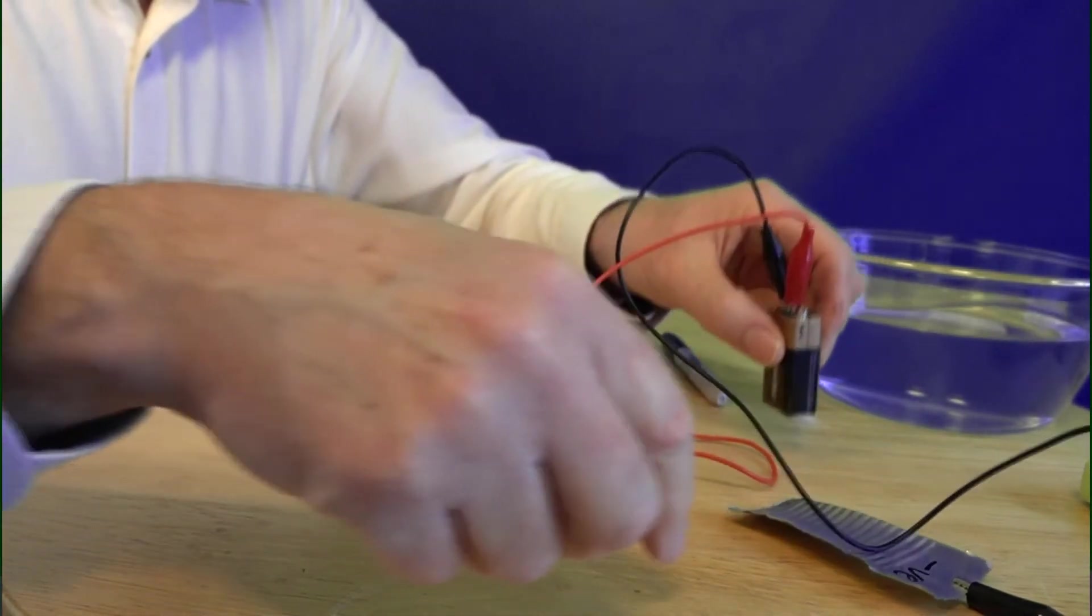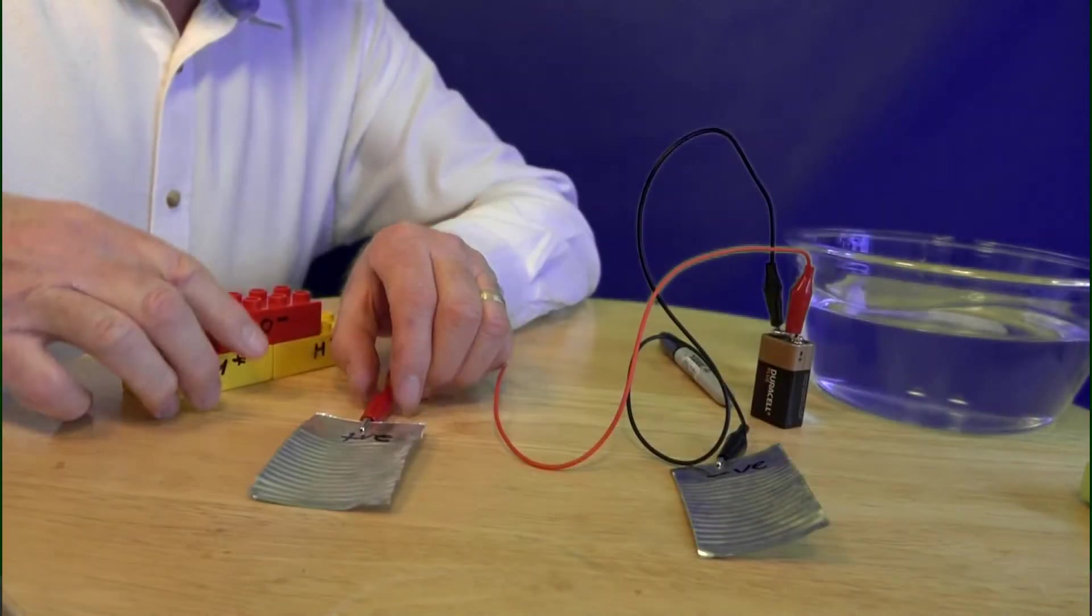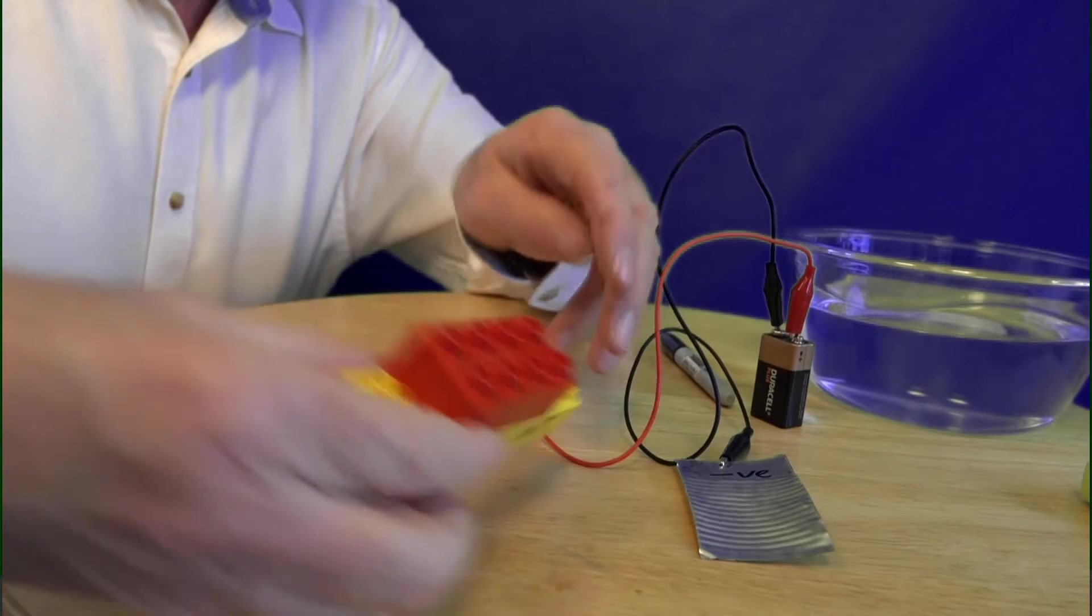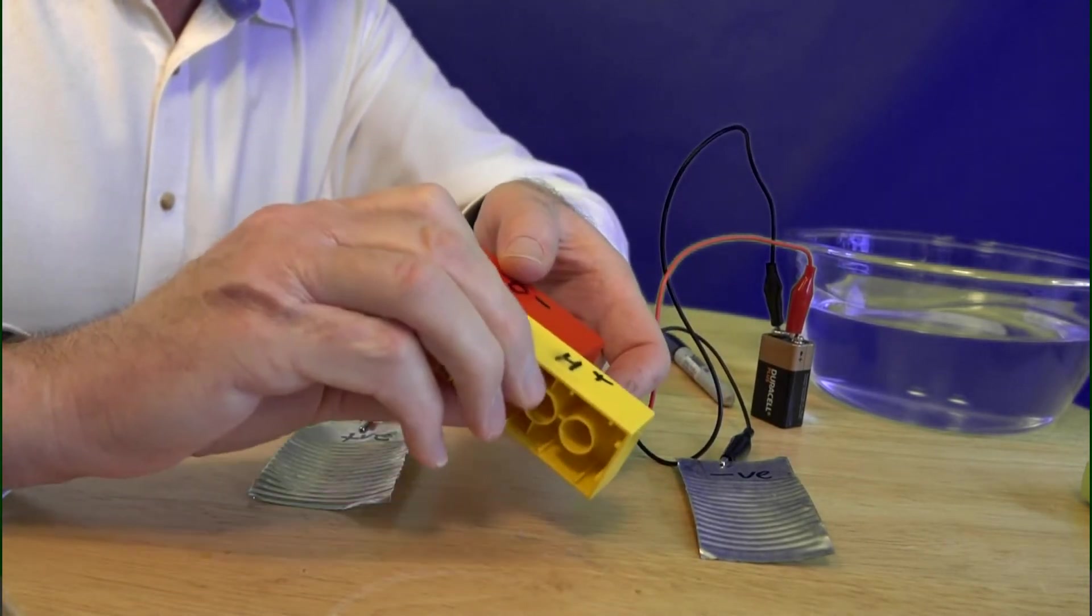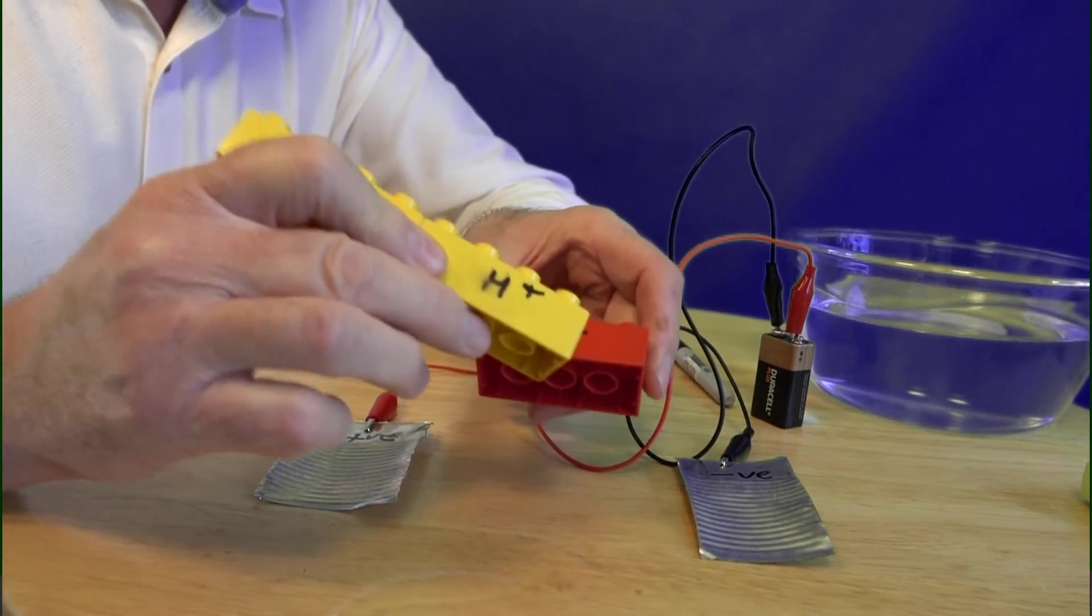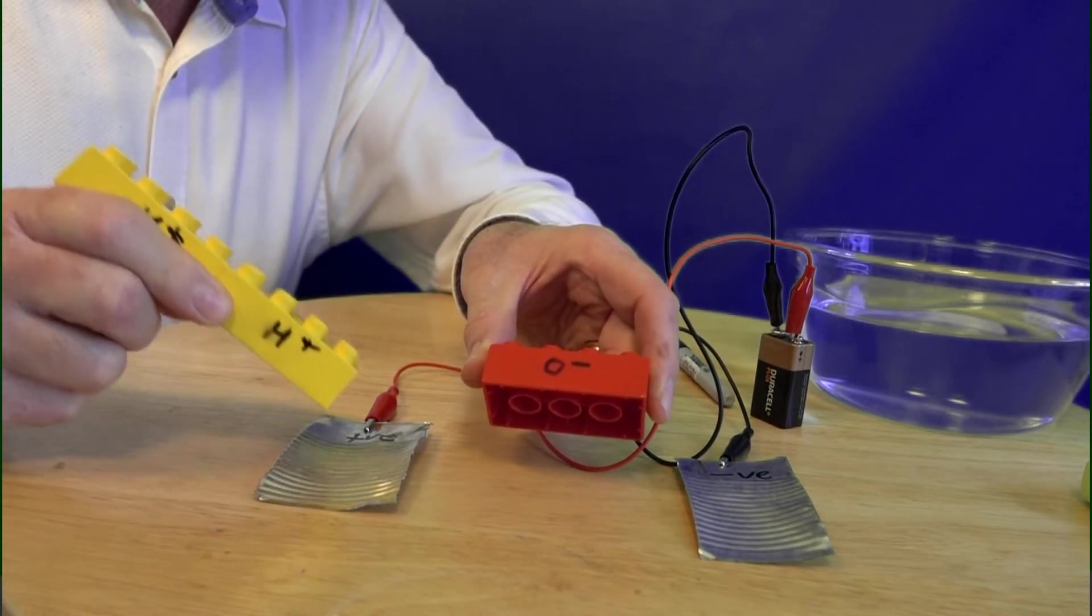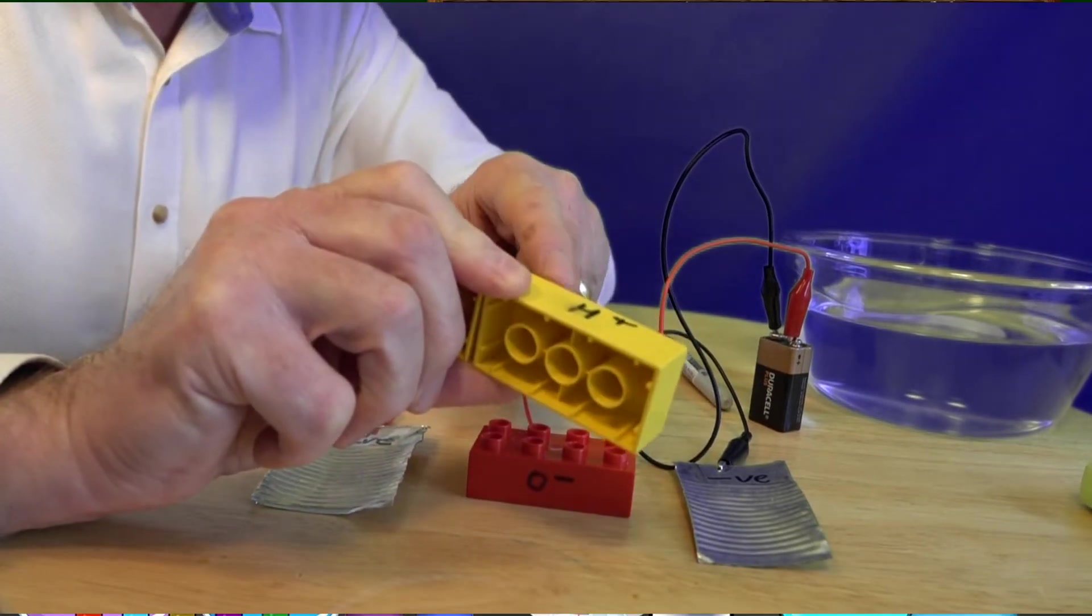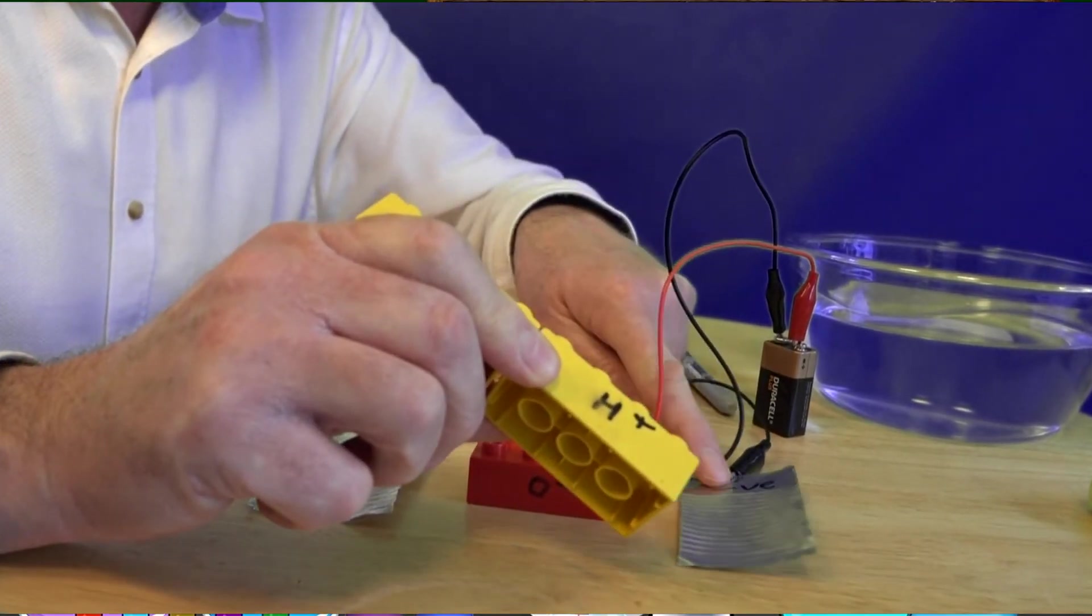Why this is important is because remember our water molecule here, the hydrogen is positively charged. So we'll put a little plus on there and a little plus on there, and the oxygen is negatively charged. So we'll put a minus on there. So when we put these into the water what this is going to do is it's going to supply the electrical energy into the water and it's going to split these apart.